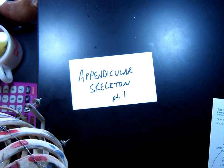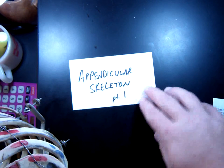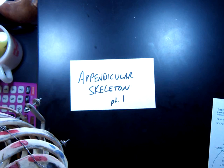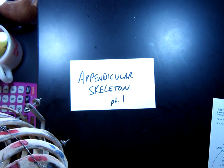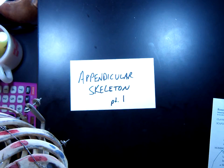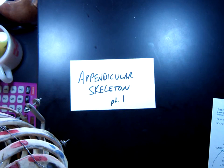Hello and welcome. This is the appendicular skeleton, part one. If I haven't explained before what the appendicular skeleton is, it's basically the arms, legs, shoulders, and hips. In other words, it's the pectoral girdle, which includes your clavicle and your scapula — basically your collarbone and your shoulder blade — and your arms, and then the pelvic girdle, which includes your hips, legs, and feet.